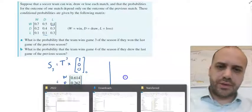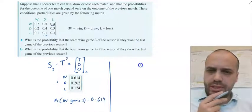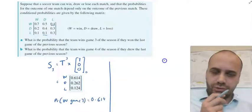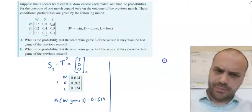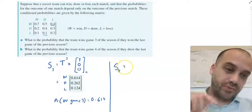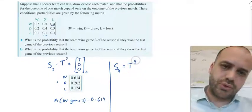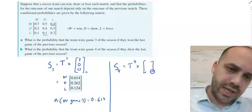And let's do part B on the right side of this line here. What is the probability that the team wins game 4 of the season if they drew the last game of the season? So same question. Fourth game, we've done the counting, so we know that 4 is just going to be the fourth game, so that's fine.